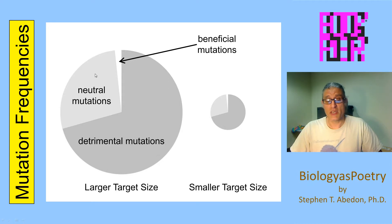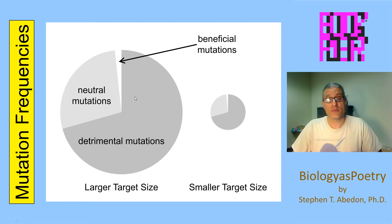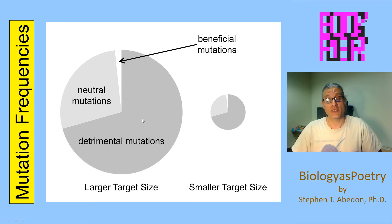Neutral mutations have an intermediate likelihood of occurrence relative to beneficial and detrimental mutations, as well as an intermediate fitness impact. Detrimental mutations tend to be the most likely of mutations to occur, whereas beneficial mutations tend to have a very low likelihood of occurrence. Thus, the majority of mutations do not benefit an organism, and in fact, perhaps the vast majority of mutations are detrimental to an organism.